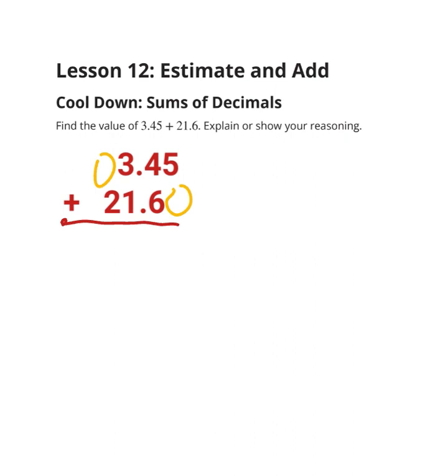I'm going to start with my hundredths place. I have 5 plus 0 is 5. Now, I'm looking at my 4 and my 6.